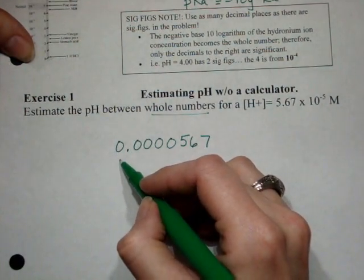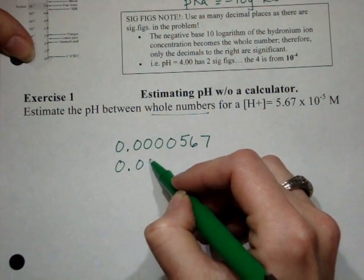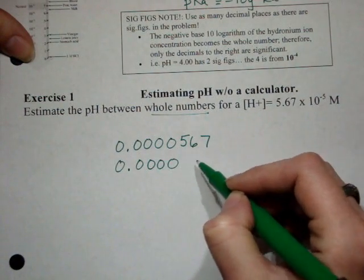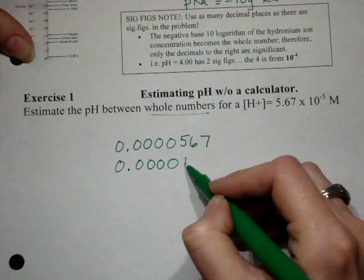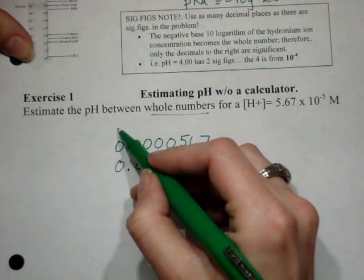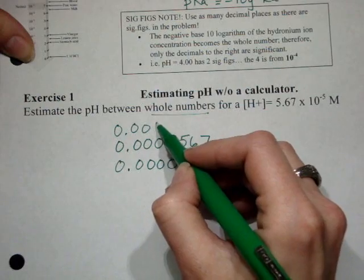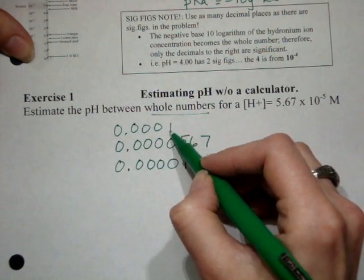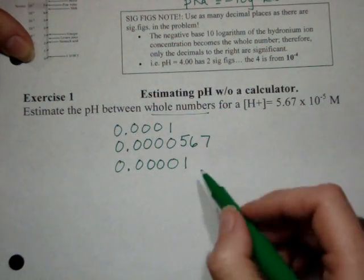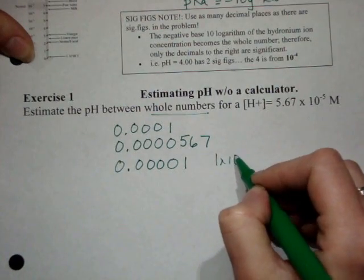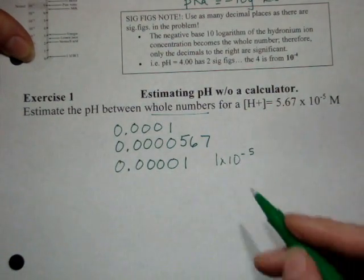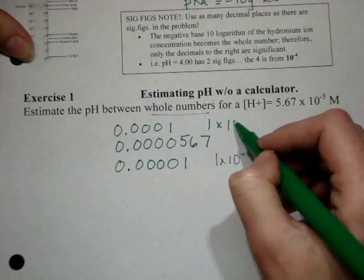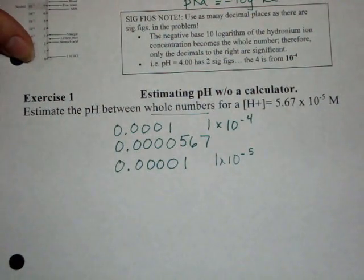That's somewhere in between, if I wanted to go 1 times 10 to the something, 1, 2, 3, 4, 5, and then the upper bound of that would be 1. So this would be 1 times 10 to the negative fifth, whereas this would be 1 times 10 to the negative fourth.